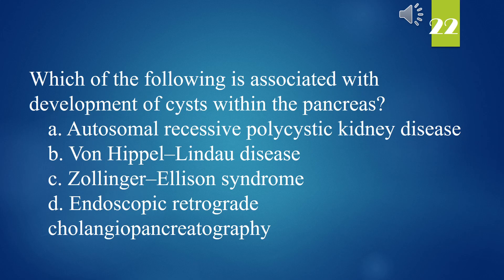Which of the following is associated with development of cysts within the pancreas? A. Autosomal recessive polycystic kidney disease. B. Von Hippel-Lindau disease. C. Zollinger-Ellison syndrome. D. Endoscopic retrograde cholangiopancreatography. The answer is B. Von Hippel-Lindau disease.